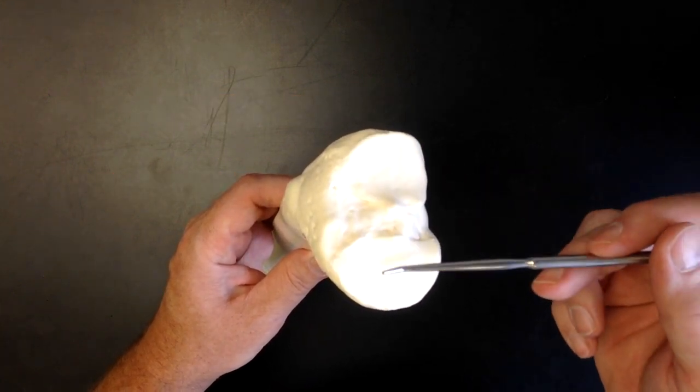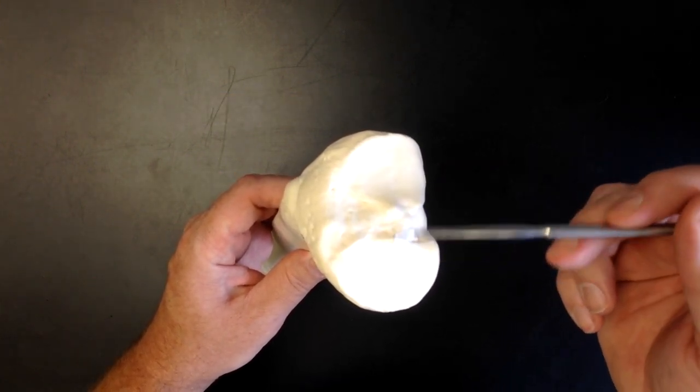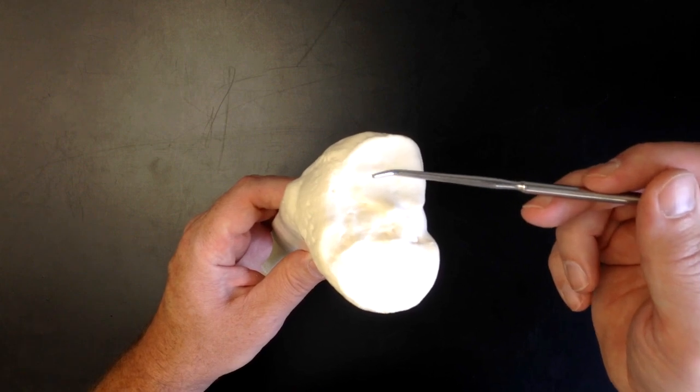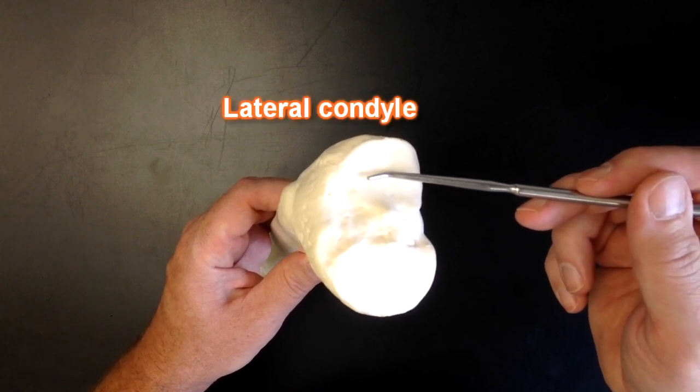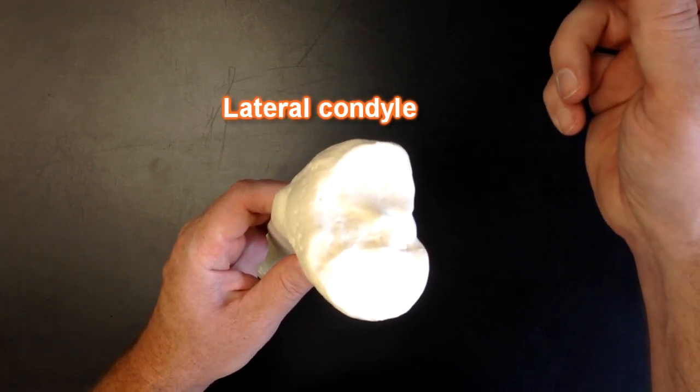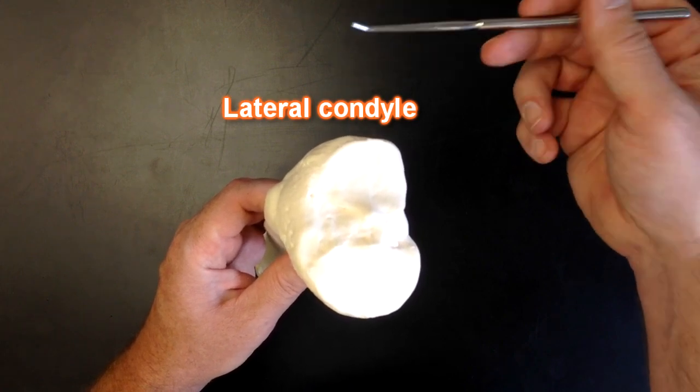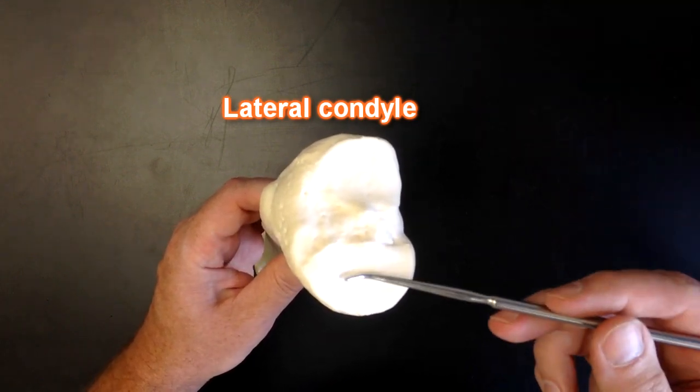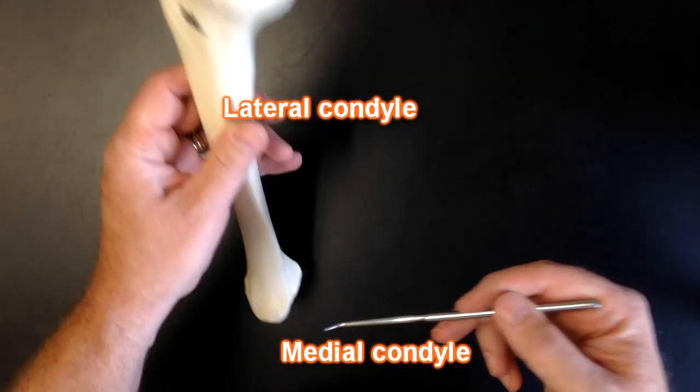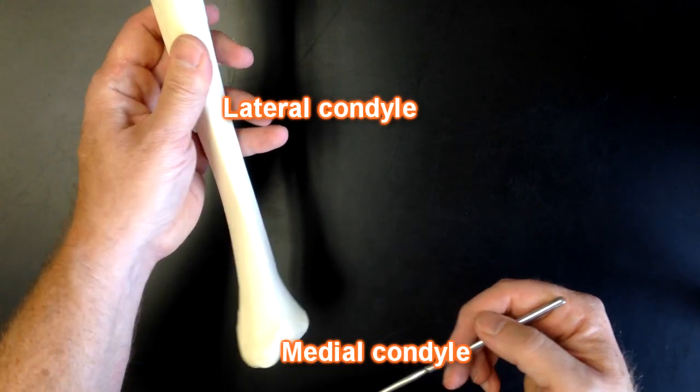In between the condyles, and by the way, this condyle right here is the lateral condyle. Remember, this was the lateral side where the fibula would articulate, and this is the medial condyle right here. This is on the same side as the medial malleolus.